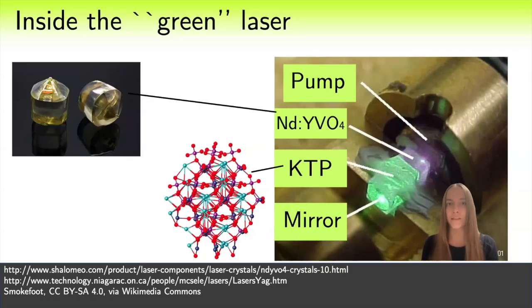A laser with an active medium of neodymium-doped yttrium vanadate generates infrared light. Its wavelength is 1064 nm and we can't see it. Only after passing through a crystal of potassium titanyl phosphate with this strange crystalline structure it becomes green with the wavelength 532 nm. It is green and we can see it. Note that its wavelength is 2 times smaller.